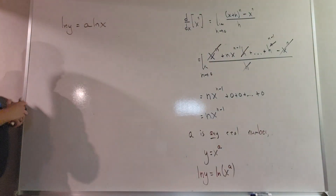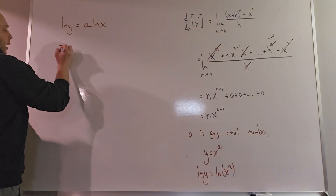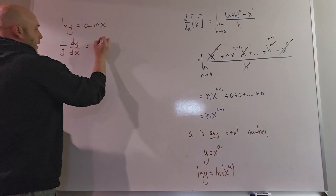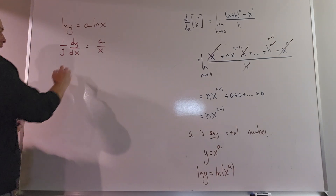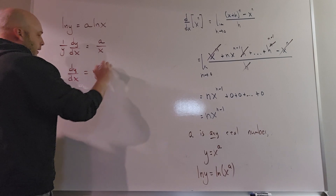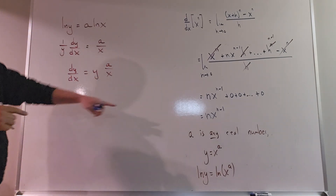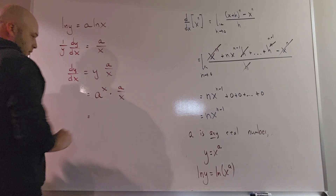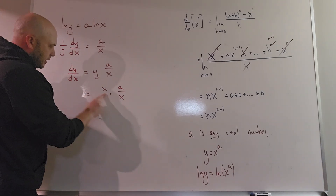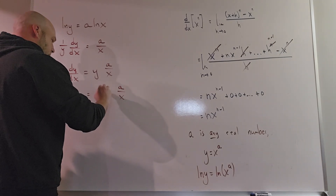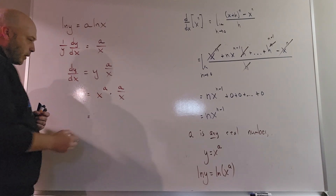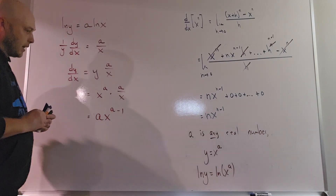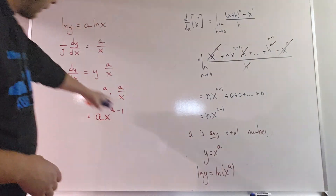Applying implicit differentiation: the derivative of ln(y) is (1/y)·(dy/dx) by the chain rule. On the right side, the derivative of a·ln(x) is a/x. Solving for dy/dx gives dy/dx = y·(a/x). Substituting back y = x^a, this is x^a · (a/x). Combining exponents by subtraction gives a·x^(a−1), which is exactly the power rule — confirming it for any real-number exponent a.